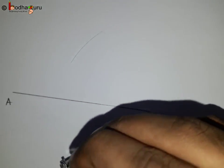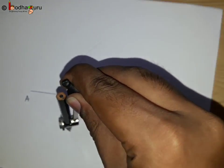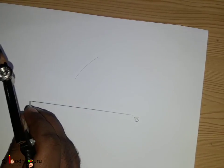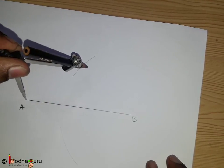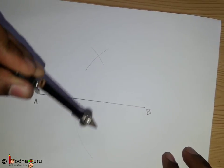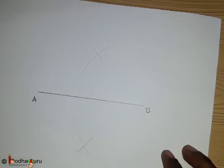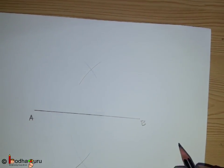Next, with A as center, draw arcs below and above the line segment that intersects the previous arcs.